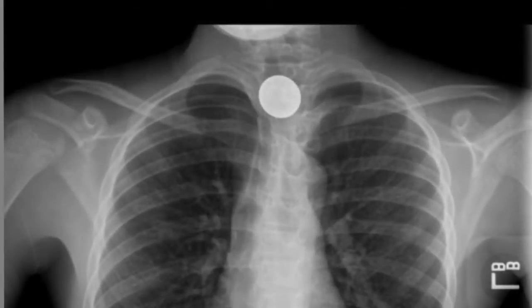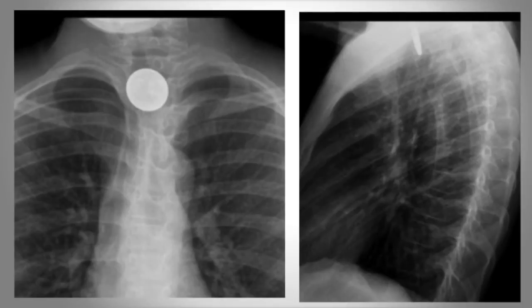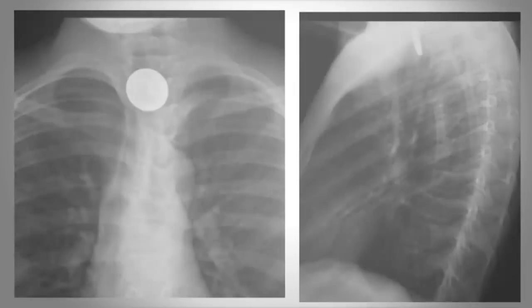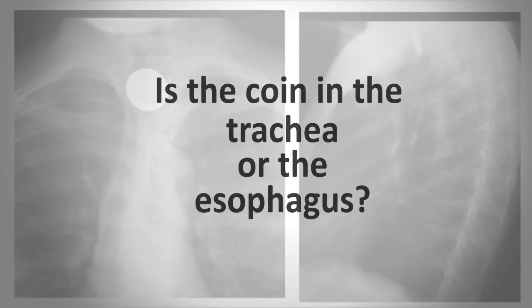Here is a chest radiograph of a young patient who has some discomfort in the neck. Shown here is what looks like a round metallic opacity. Is that metallic opacity a disk or a sphere? To determine this, we need to get another view. From this lateral view, we can now see a radiopaque line. This object, round and thin, has to be a disk — most likely a coin. From the size of it, it looks to be a quarter. But is this coin in the trachea or in the esophagus?